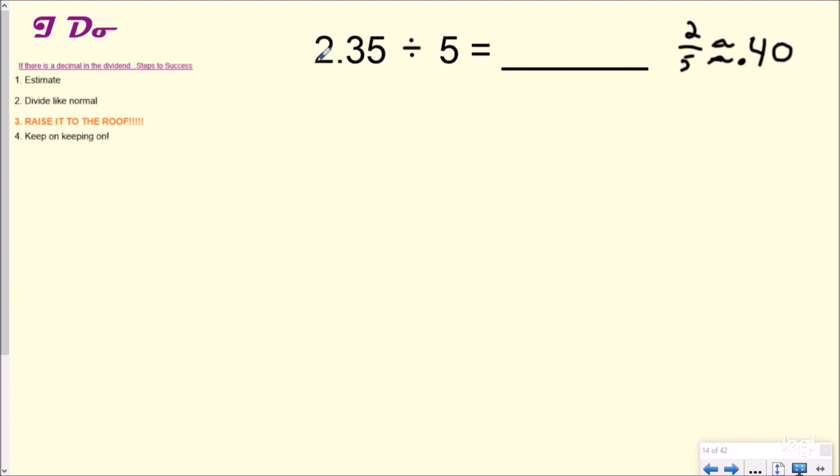And again, this would be going on in my head, but step number two, we're going to divide like normal. So I'm going to put my dividend inside of the division box. And my divisor goes on outside just like normal. And just like we did with our standard algorithm song, how many groups multiply, subtract, bring down. So how many groups of 5 go into 2, the answer to that is zero.